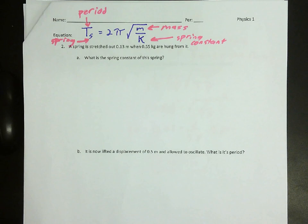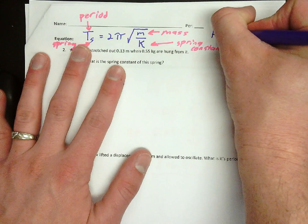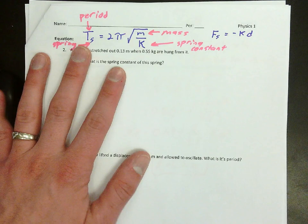The restoring force of springs, however, is much easier to deal with. And it's this equation here. F_s equals negative KD. Sometimes I've written it as KX. It works the same either way.